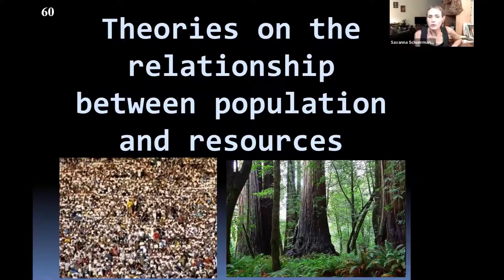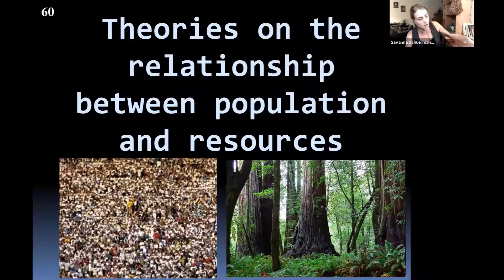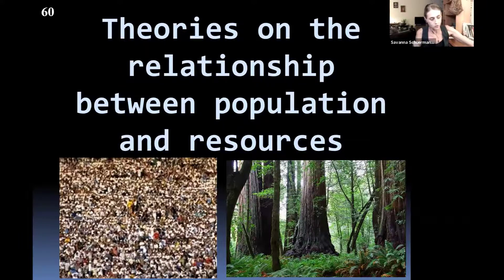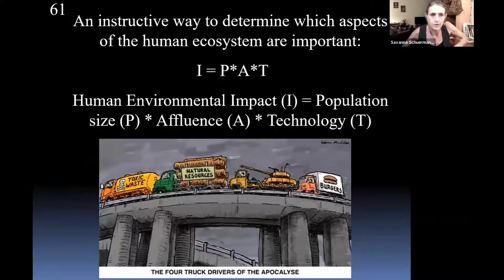A lot of people argue we have a population problem — too many people and not enough resources — and that's what's causing environmental degradation, poverty, and hunger. There's just not enough stuff and population grows too quickly. This argument goes back to a demographer named Thomas Malthus, who wrote an essay about this over 200 years ago, and it's still influential today. I'll come back to Malthus in a second.